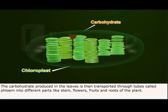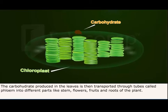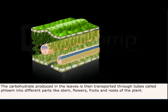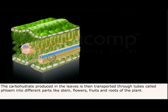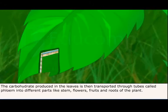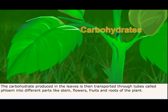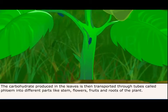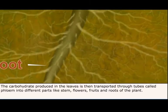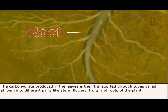The carbohydrate produced in the leaves is then transported through tubes called phloem into different parts like stem, flowers, fruits, and roots of the plant.